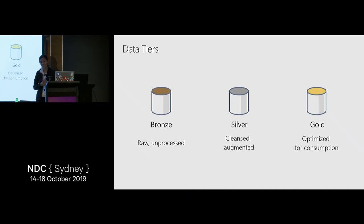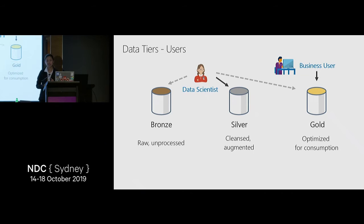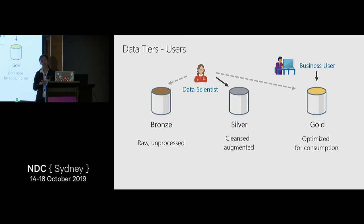To extend the data lake analogy, gold datasets are like bottled water — clean, convenient, and ready for use, consumed by business users. But why do we need silver datasets? That's for your data scientists. They don't want to deal with the intricacies of raw source systems or convert date strings into actual dates. They want a cleansed dataset but still want the anomalies that exist — so the silver dataset is perfect for data scientists.